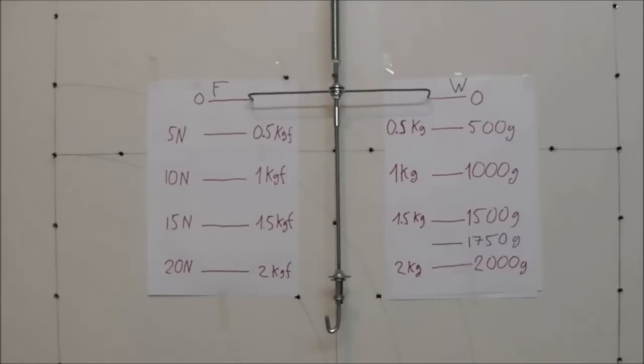We can mark forces in kilogram force units, in short kgf, with the same numerical values as weight in kilogram on the opposite side. And also newtons, by multiplying the kilogram force units by 9.81 N. But from a practical point of view, we multiply here by 10. So, our spring weight balance is also a force meter at the same time.